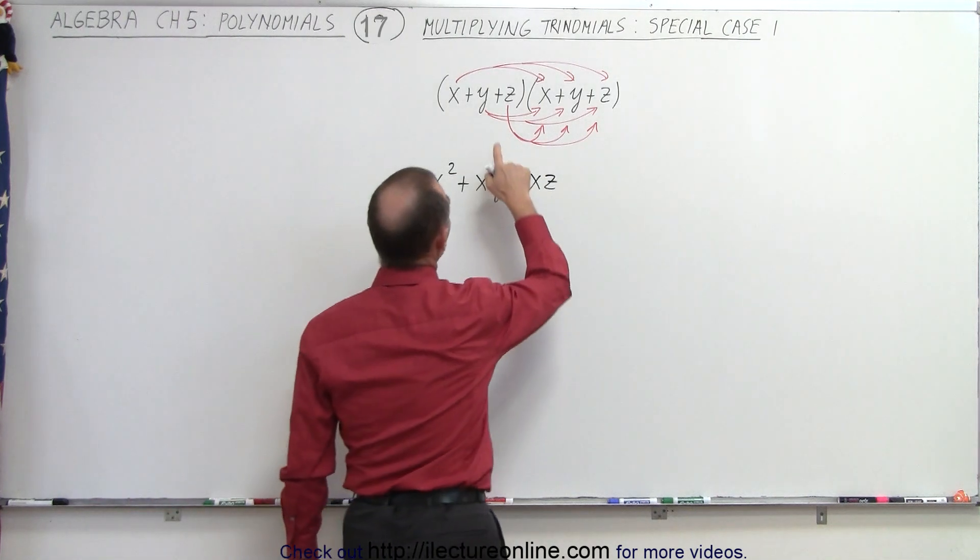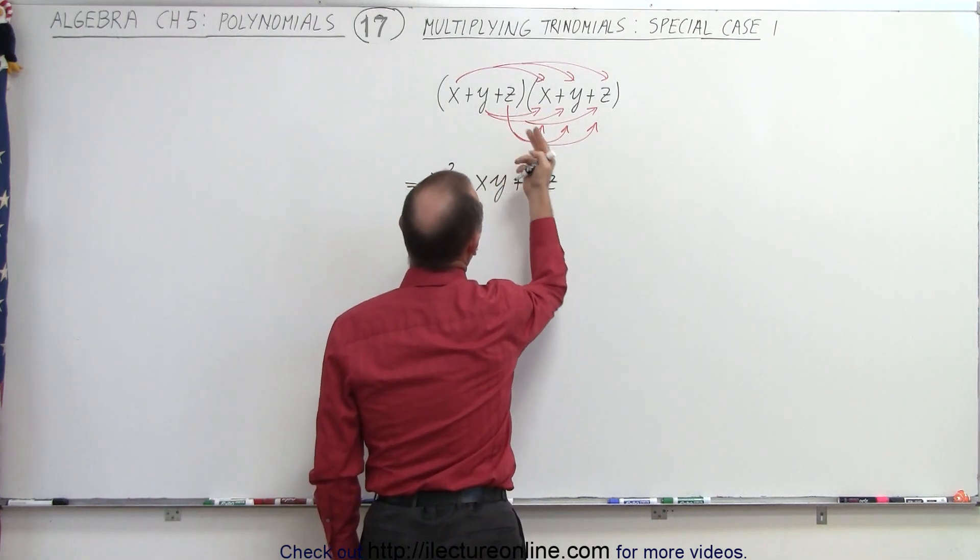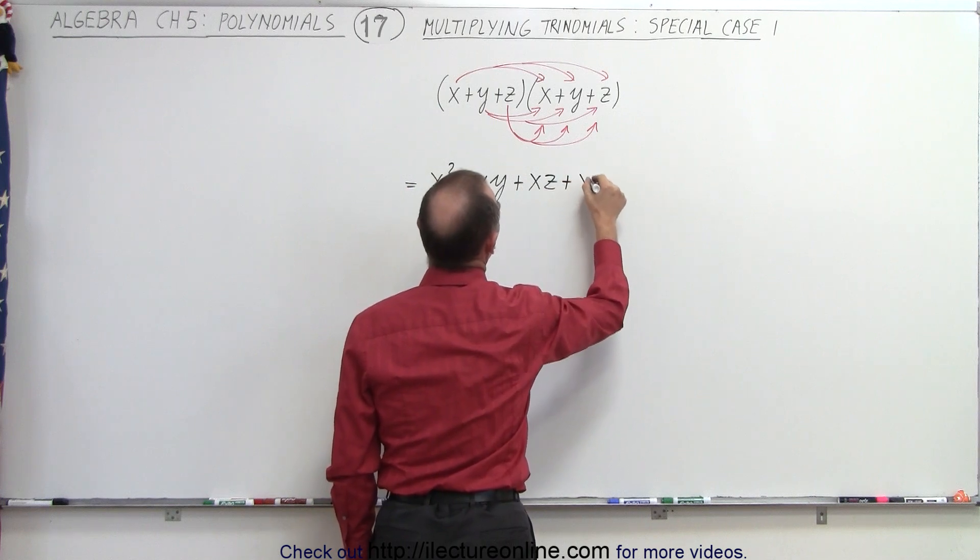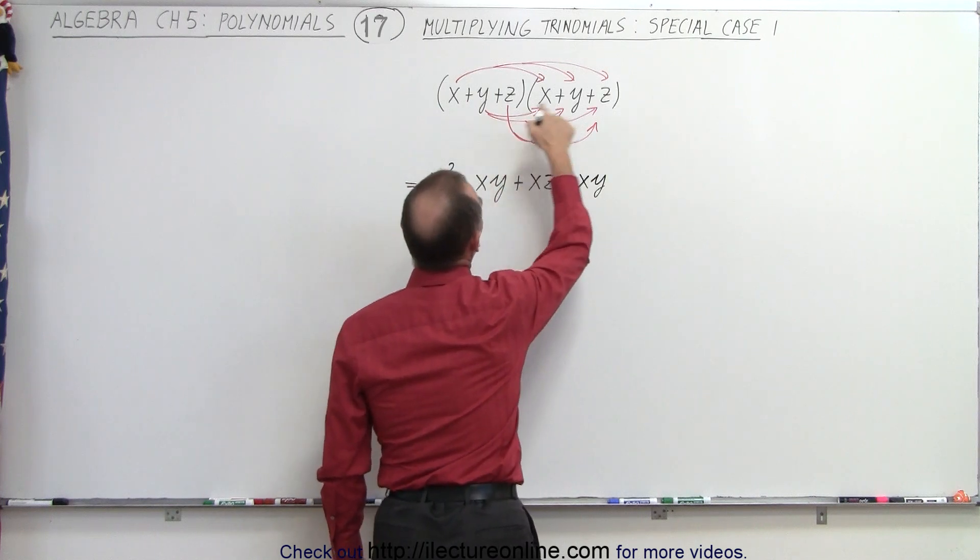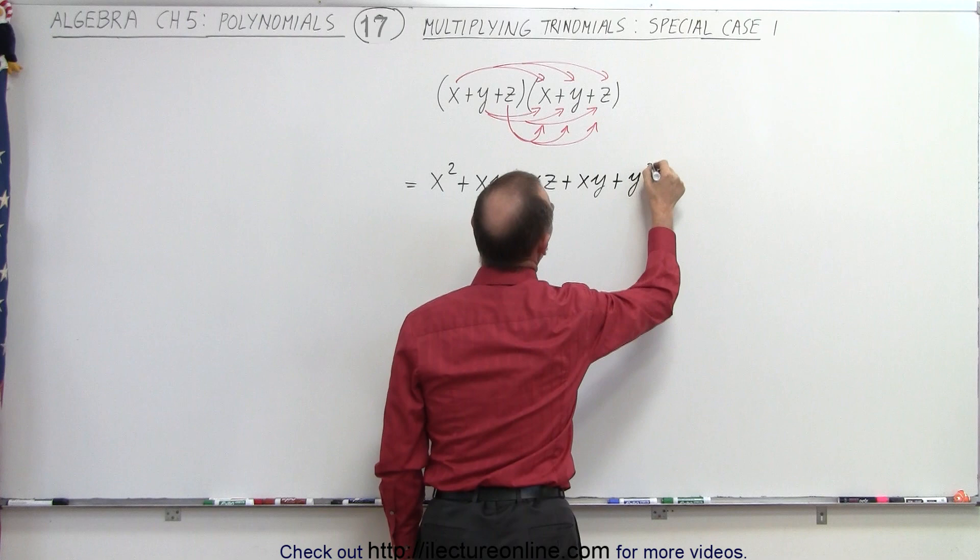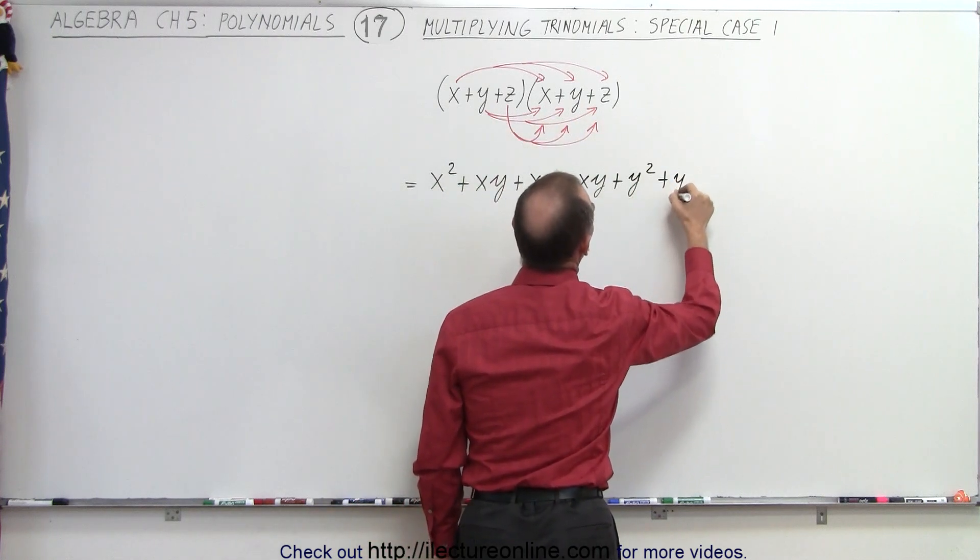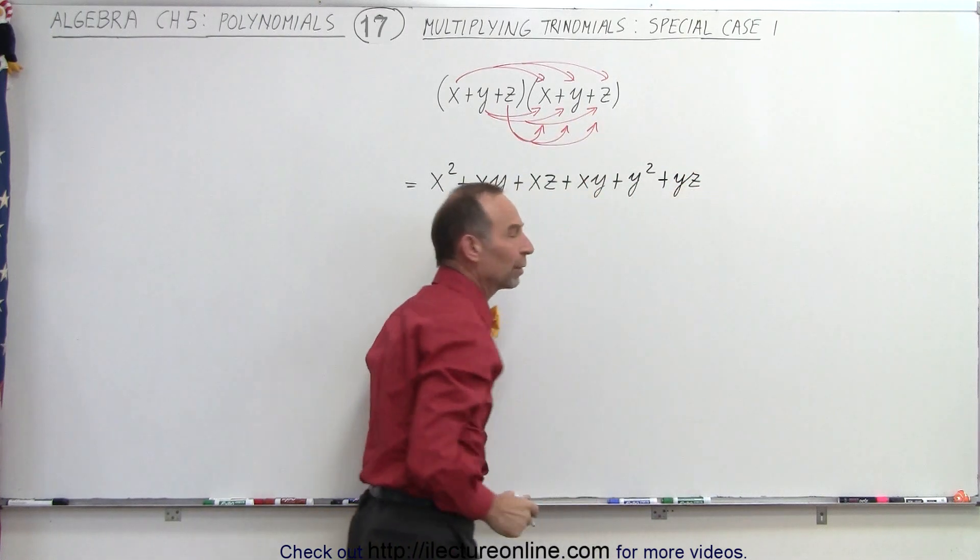The next three will be obtained by multiplying y times x, but we'll write as xy, y times y, which is +y², and y times z, which is +yz. That's our next three terms.